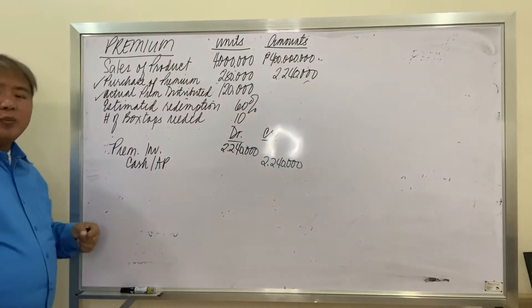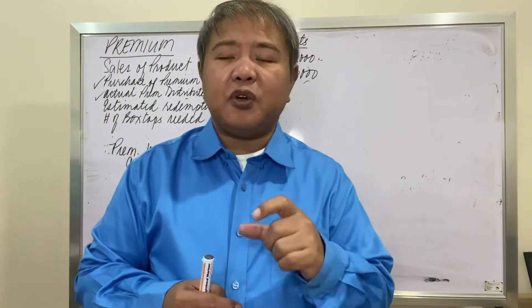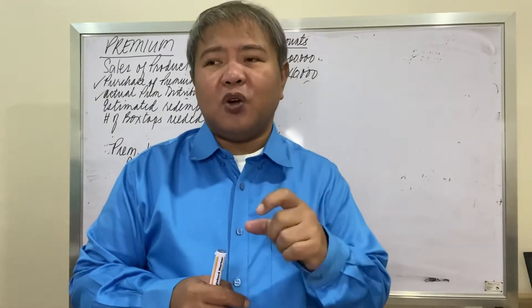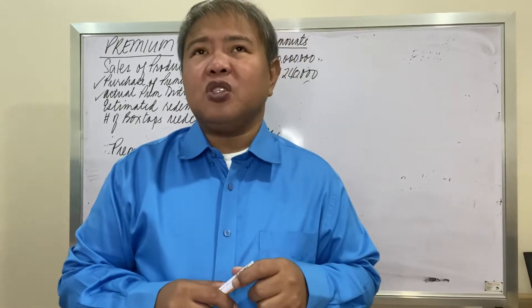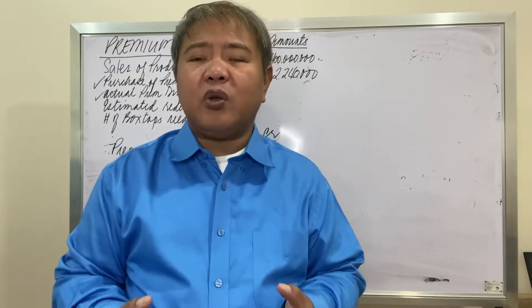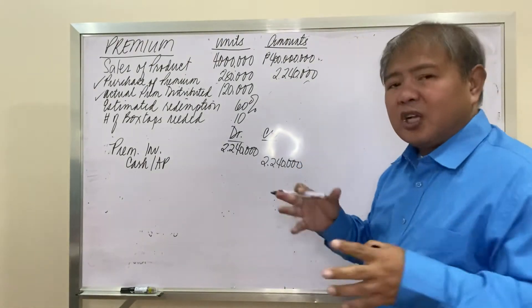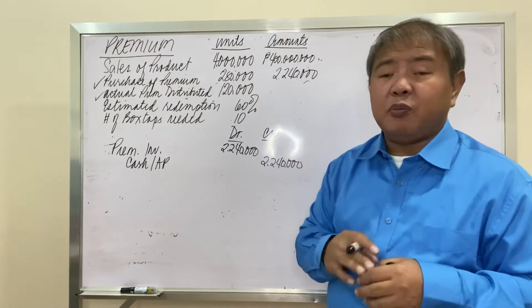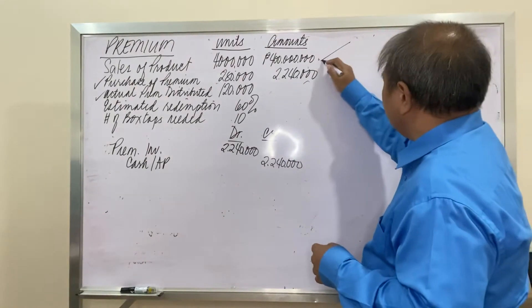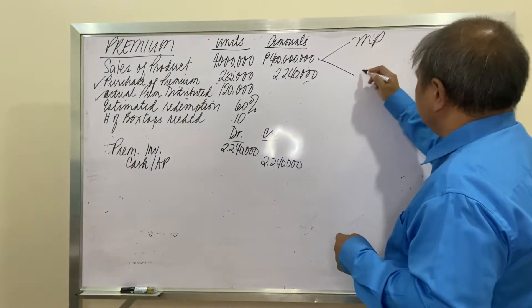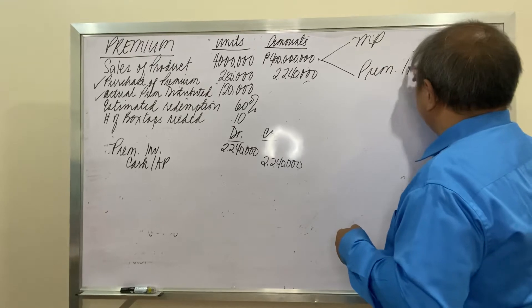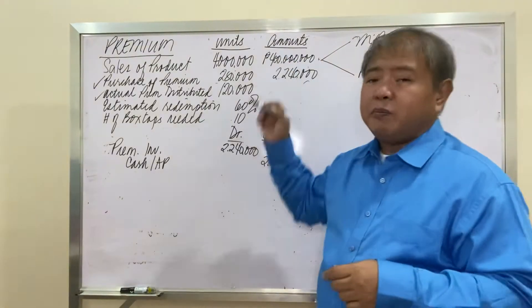The next entry is the sale of the product. As I mentioned, that premium item is not for free — it has a cost, so the company has to be compensated. Now, there's a new standard on revenue recognition for contracts with customers. Based on that standard, we have to allocate the selling price of the item into two, because essentially the company is selling two items: one is the main product, and the other one is the premium item.